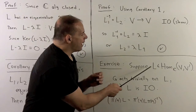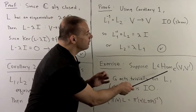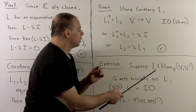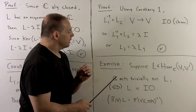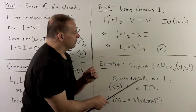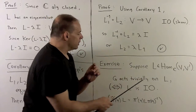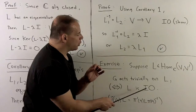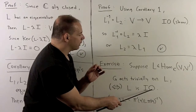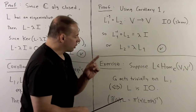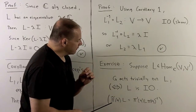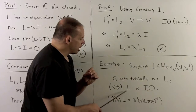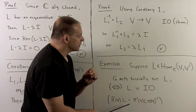Exercise: suppose L is in Hom from V to V prime. Show that G acting trivially on L is equivalent to L being an intertwining operator. Recall from last time, we have this definition for the G-action on linear transformations.